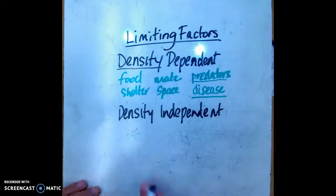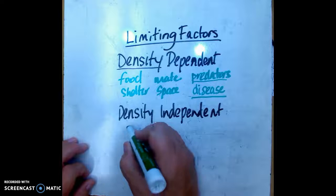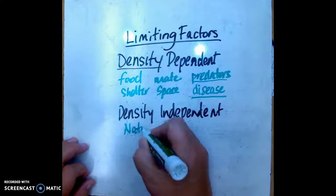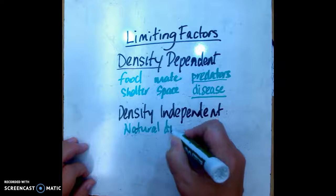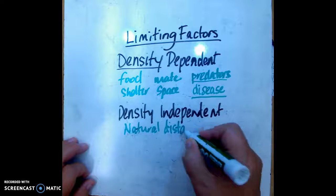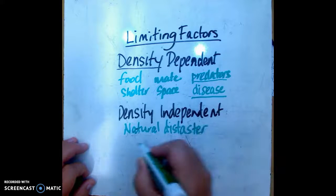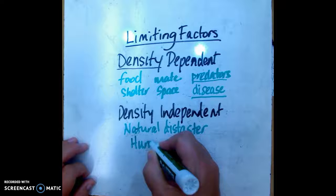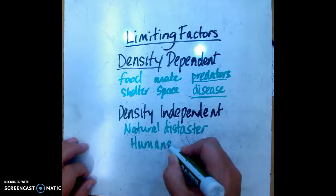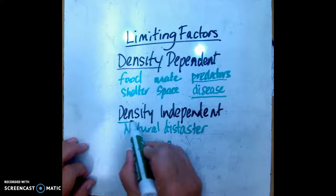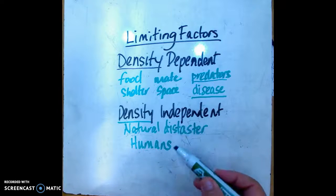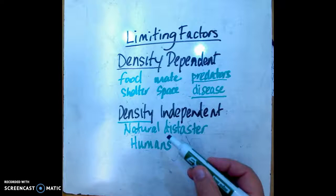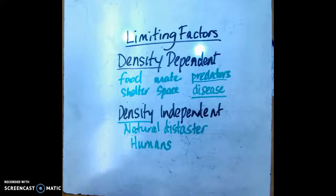And then we have density independent limiting factors, and those are the things that it really doesn't matter how many individuals there are, it's still going to affect the population. Those are things like natural disasters and humans. Human activity is definitely density independent because it doesn't matter how many organisms there are, they're all going to be affected or limited by natural disasters or humans.